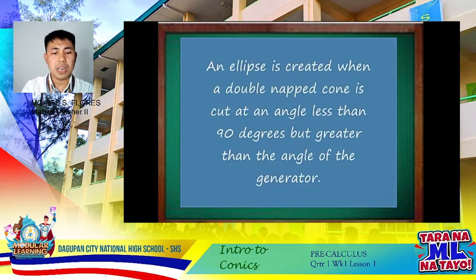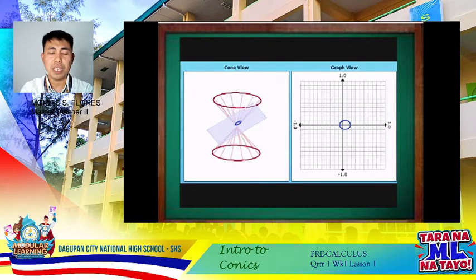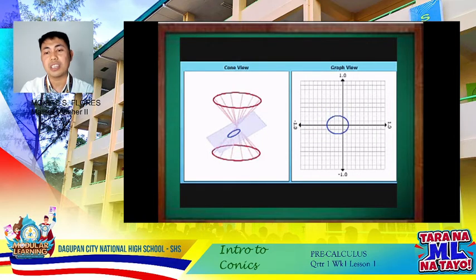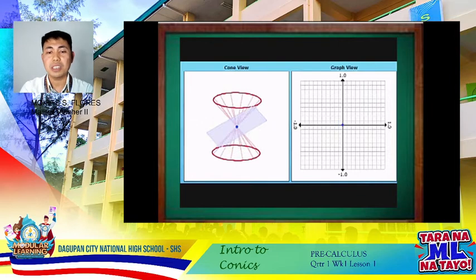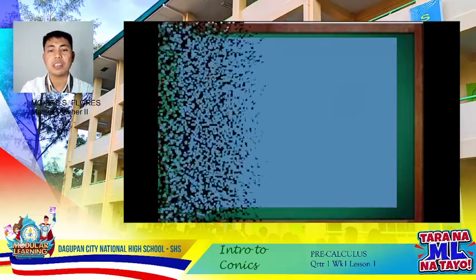An ellipse is created when a cone is cut at an angle less than 90 degrees but greater than the angle of the plane. Observe the plane as it moves on the cone. Just like a circle, once the plane reaches the apex of the cone, it degenerates into a point. So both circle and ellipse degenerate into a mere point.